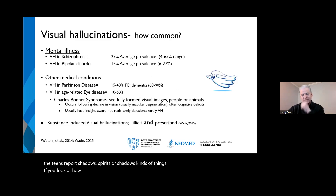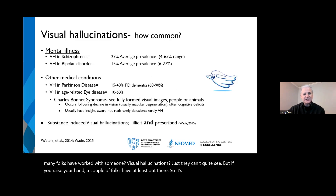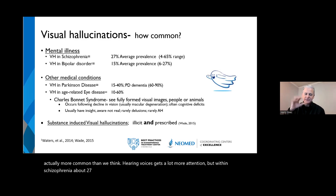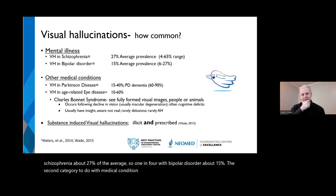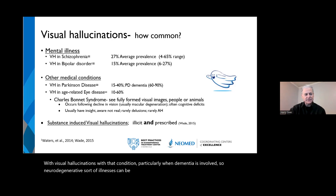Visual hallucinations are more common than we think. Hearing voices gets more attention, but within schizophrenia about 27% — about one in four — experience VH. With bipolar disorder, about 15%. A second category involves medical conditions, particularly Parkinson's, which has a strong association with visual hallucinations, especially when dementia is involved. Neurodegenerative illnesses can be accompanied by visual hallucinations, as can age-related eye disease.